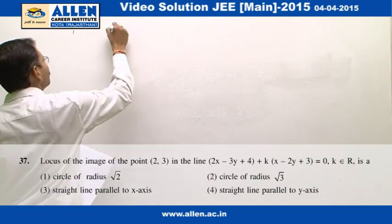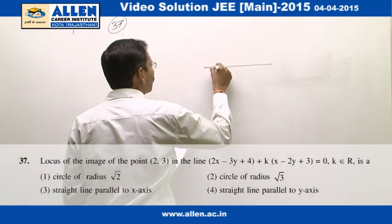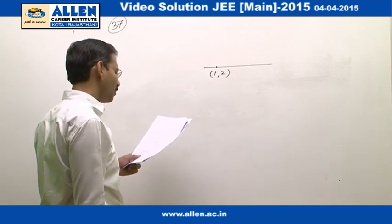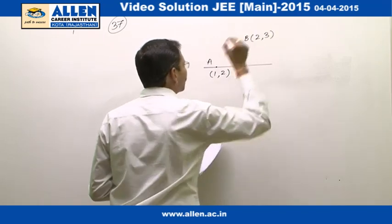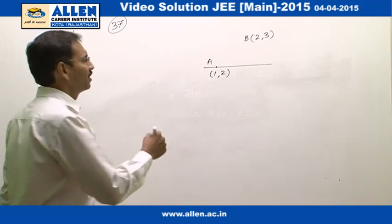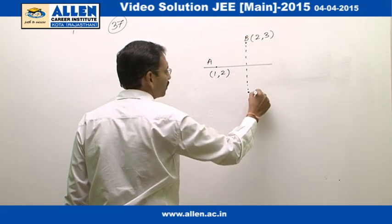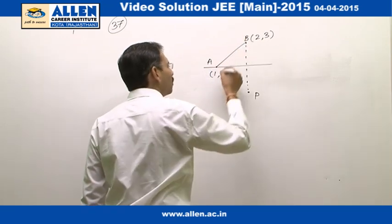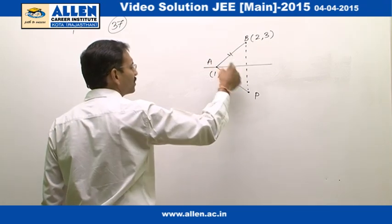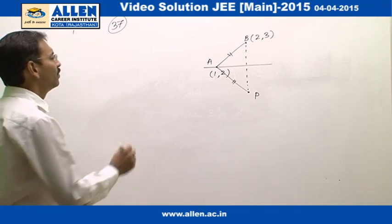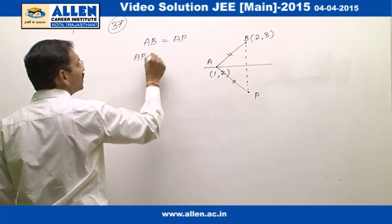Question number 37. We have a family of lines passing through a fixed point A at (1, 2), and we have another point B at (2, 3). We are supposed to calculate the locus of the image of B in this family of lines. The reflection of B is say P. We can see that whatever be the line, AB will equal AP — these two triangles are congruent — therefore the length AP will be constant and equal to AB, which is root 2.